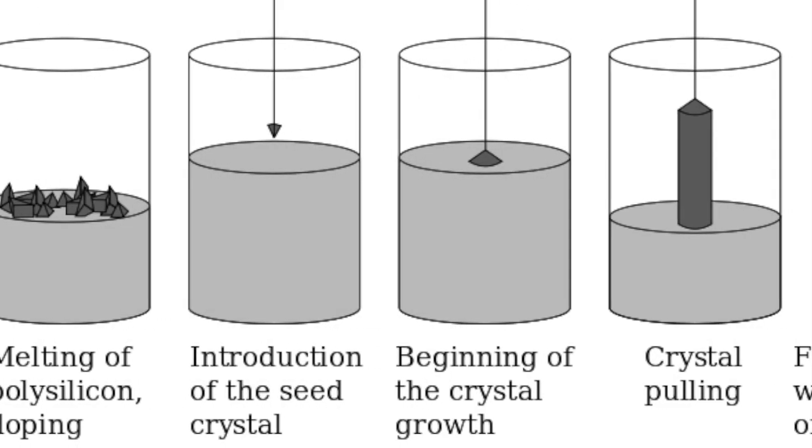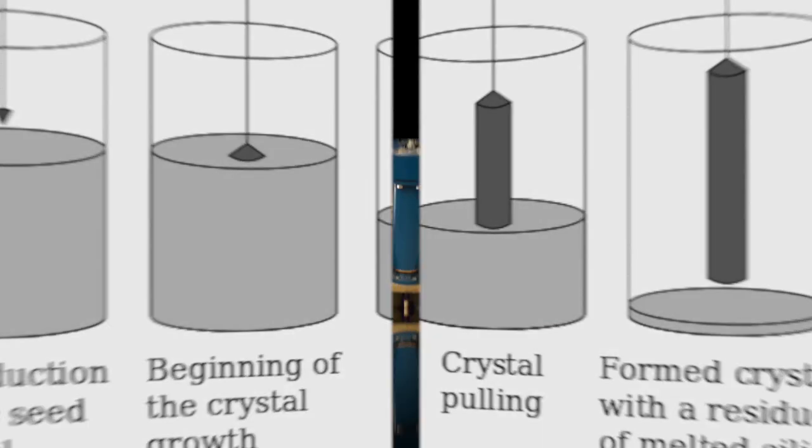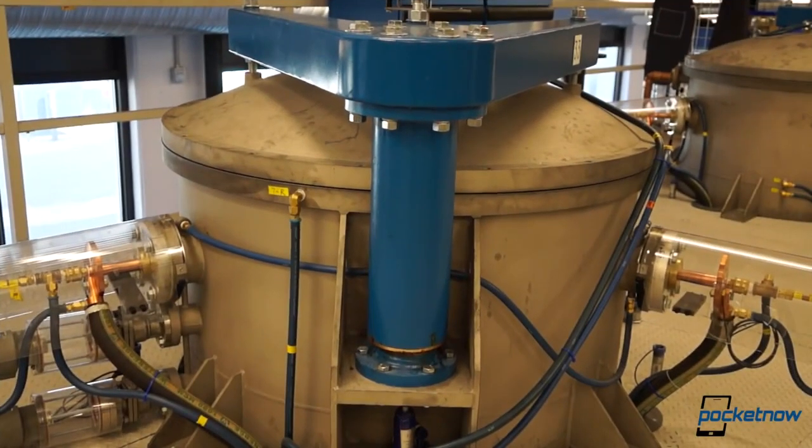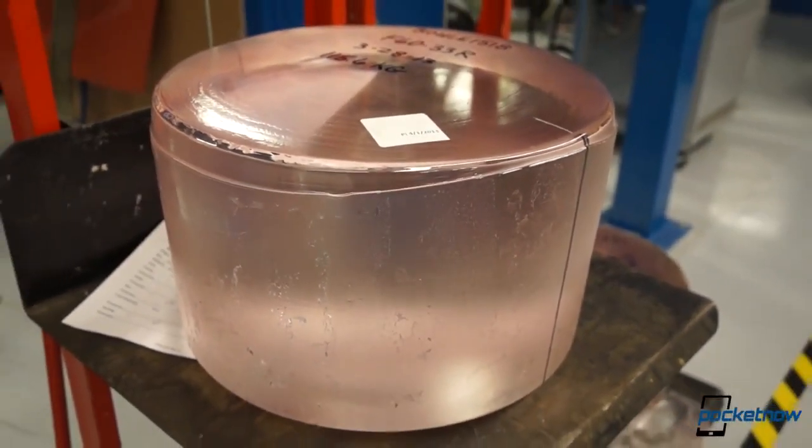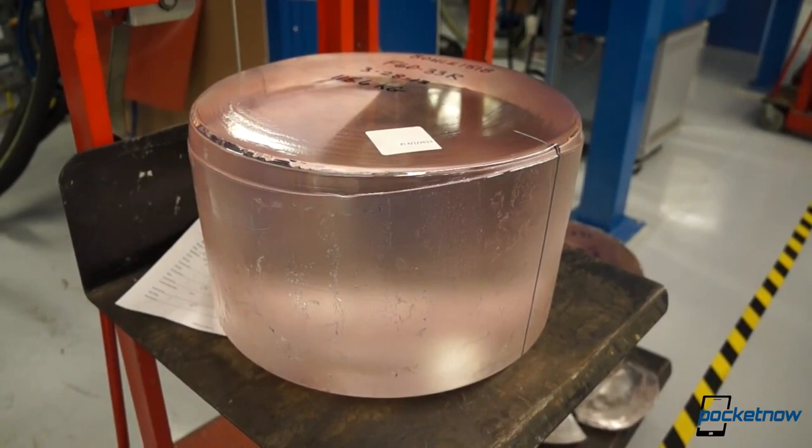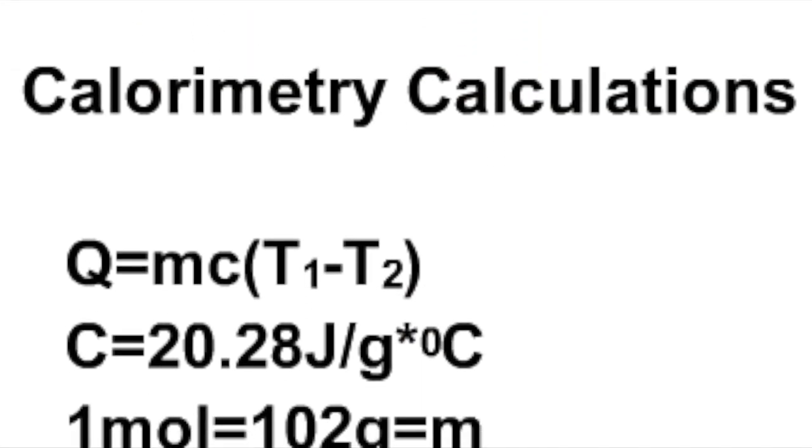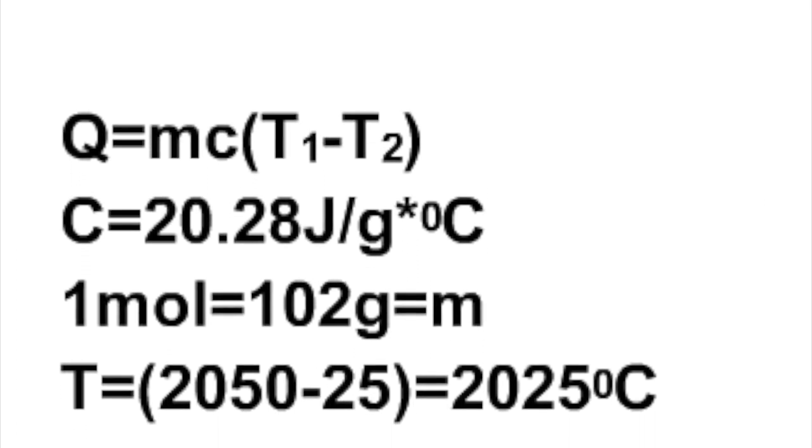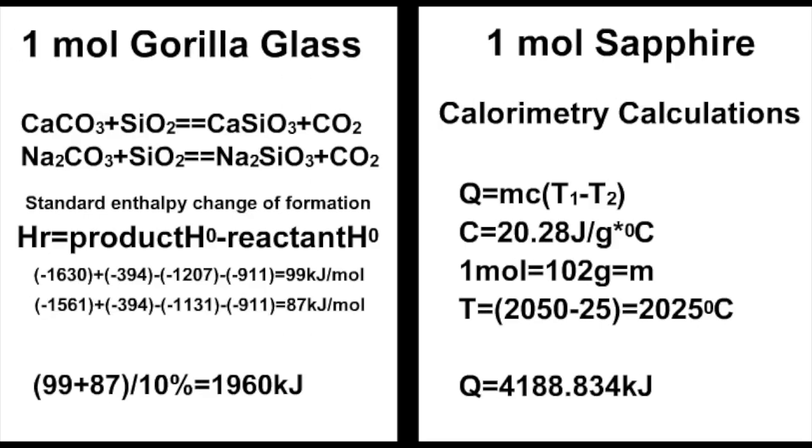A special craft called Czochralski is used in the production of sapphire. Because that is a physical change, we can only use the calorimetric calculations to find out the energy. Comparing these two data, the Gorilla Glass is more environmental.